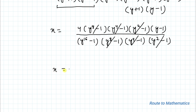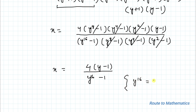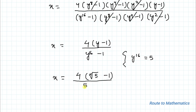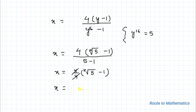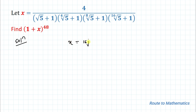After cancellation, we have x equals 4(y − 1) divided by (y^16 − 1). Since y^16 = 5, substituting back gives x equals 4(16th root of 5 − 1) divided by (5 − 1), which is 4(16th root of 5 − 1) divided by 4. The 4s cancel, giving x equals 16th root of 5 minus 1.